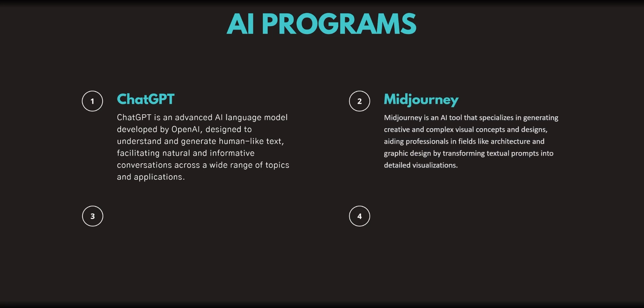The next is MidJourney. MidJourney is an AI tool that specializes in generating creative and complex visual concepts and designs, aiding professionals in fields like architecture and graphic design by transforming textual prompts into detailed visualizations. This is often used by a lot of architects now, where we can generate literally thousands of images very quickly. It's how we direct it that can help us create plans, sections, and 3D models. It can also help us interpret and describe existing images and blend images — a really valuable use for this AI generator.